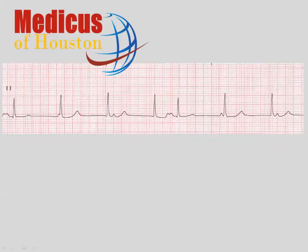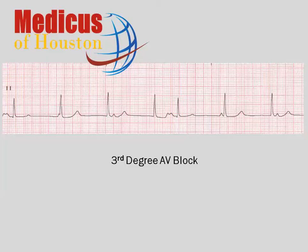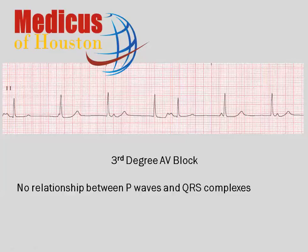Let's look at this lead-two rhythm strip. Is this third-degree AV block or AV dissociation without block? What do we look for in third-degree AV block? First of all, as everyone knows, we look for a rhythm in which there's no association between P waves and QRS complexes. Unfortunately, that's really about all most people know, and it really doesn't help.